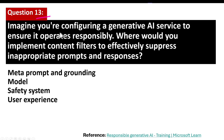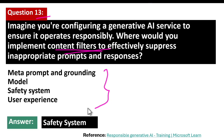Imagine you are configuring a generative AI service to ensure it operates responsibly. Where would you implement content filters to effectively suppress inappropriate prompts and responses? The correct answer is the safety system. The safety system layer includes platform-level configuration and capabilities that help mitigate harm.